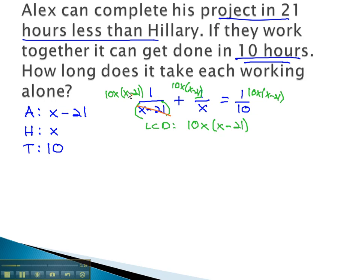As we do, we see the x minus 21's dividing out of the first fraction, leaving just 10x. The x is dividing out of the second fraction, leaving 10 times x minus 21. The tens divide out of the third fraction, leaving x times x minus 21.